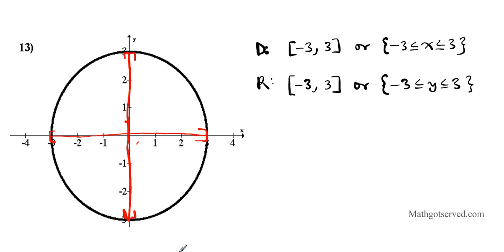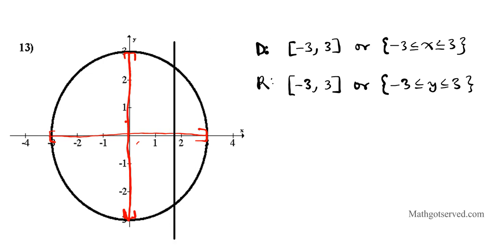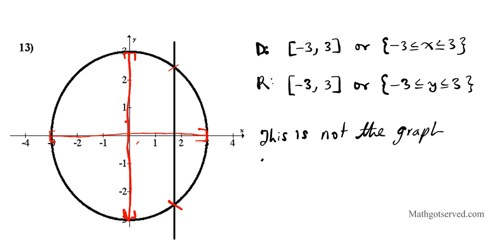Now, is this a function? We're going to use the vertical line test. If there's any point in the domain where a vertical line intersects more than once, it is not a function. And we have a problem — the vertical line intersects at one point and then another point. We have one input generating two outputs, which is not the definition of a function. So this graph fails the vertical line test — it is not the graph of a function.